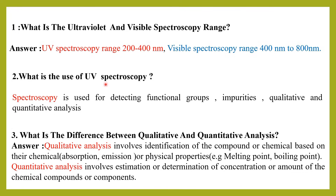The next question is: what is the use of UV spectroscopy? UV spectroscopy is used for detecting functional groups, impurities, and qualitative as well as quantitative analysis.